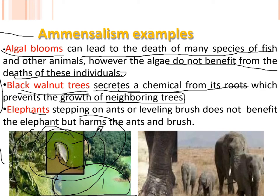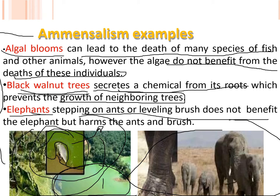Another simple example is an elephant stepping on ants. This does not benefit the elephant, but harms the ants. Elephants are generally very large, and as they step on insects or ants, the ants are killed. The ants are at a loss while the elephant gains nothing — another example of amensalism.